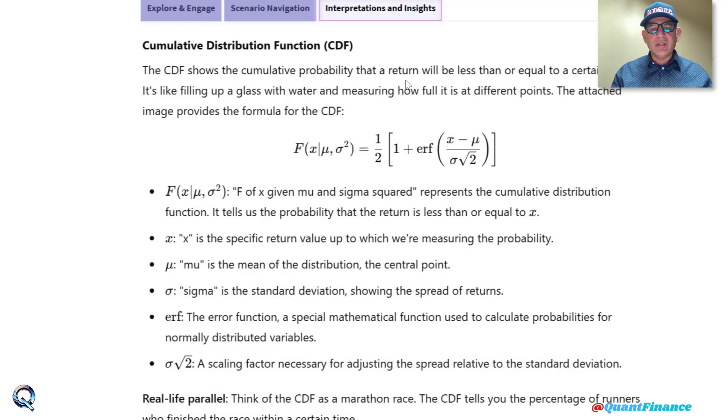The CDF shows the cumulative probability that a return will be less than or equal to a certain value. It is like filling up a glass of water and measuring how full it is at different points.